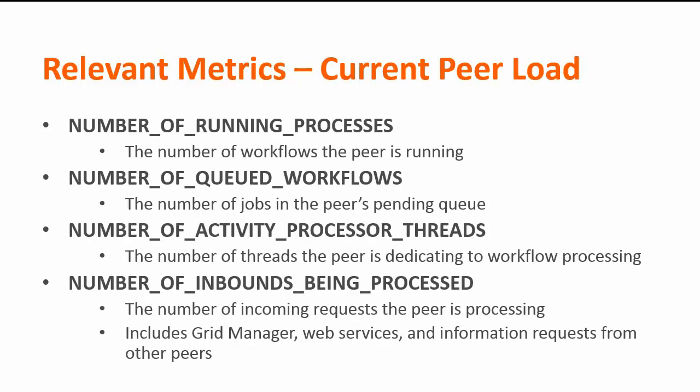The second set of metrics we're interested in are the current peer load, which is also the current grid load. These relate to what the peer or grid is doing right now. The first three relate to the number of workflows: running processes — the number running; queued — the number waiting to run (if you don't see this value, it's zero); and the number of activity processor threads dedicated to workflows. The last one is more general, because it includes grid manager, web services, messages from other peers, anything incoming to the peer. The default on this is 32 — at that point the peer starts queuing or rejecting messages. So as long as this value is below 32, the grid is at least running.